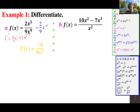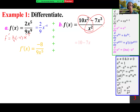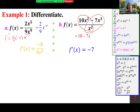When you have a rational function in fractional format, the first question is: can I simplify? In this case, if I split into two fractions, the first becomes 10 and the second becomes minus 7x, so the derivative is simply minus 7. There is no need for a quotient rule.